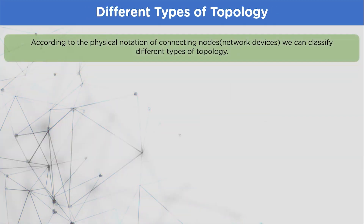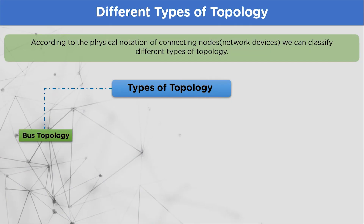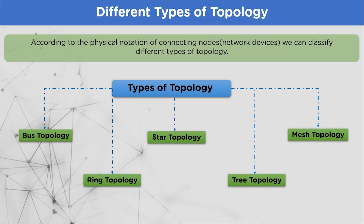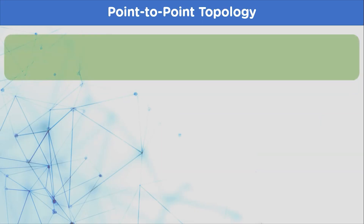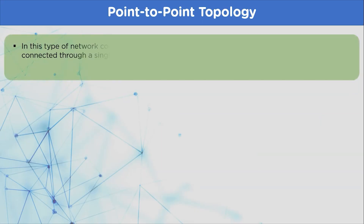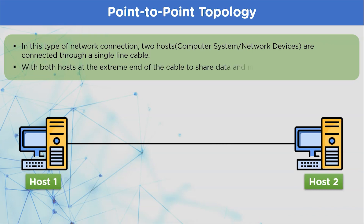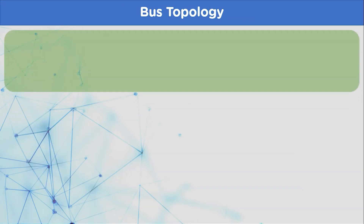Different types of topologies used in networking include bus topology, ring topology, star topology, tree topology, and mesh topology. To understand the concept of topology, let's start with point-to-point topology, the simplest form, which consists of two nodes connected through a connection medium like a network cable. The nodes share data between them, where the data sharing represents the network and the cable connection is the topology part.